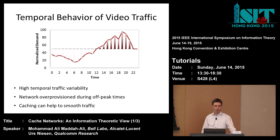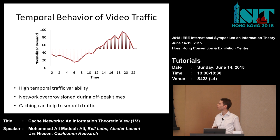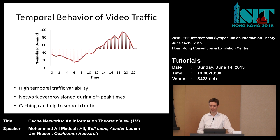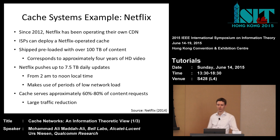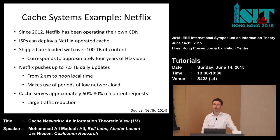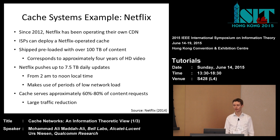In the next few slides I'll give examples of cache systems in operation today — some in the context of video traffic, others in different contexts, to give you a sense of the breadth of cache networks. The first example is Netflix, exactly in the video content space. Netflix is a popular US video on demand system. Since 2012, Netflix has been operating their own content distribution network — a CDN.